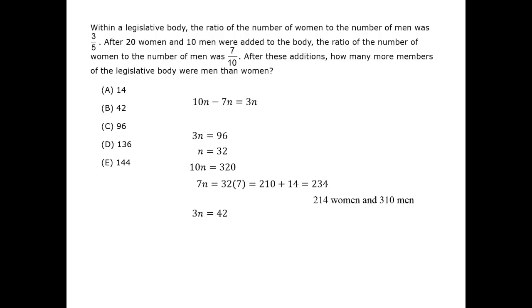If B is correct, then the difference is 42 and n equals 14. In this case, the final number of men is 140, and the final number of women is 7n, or 78.